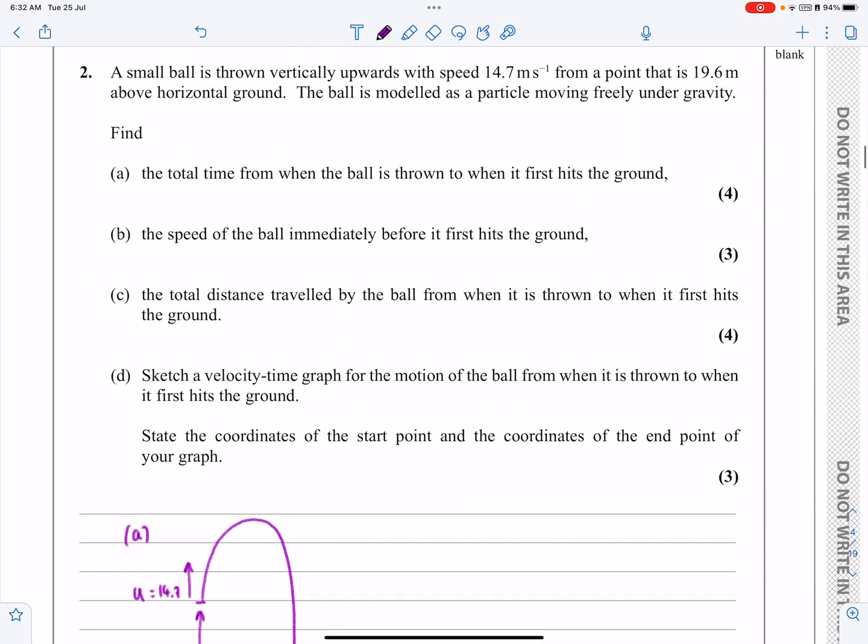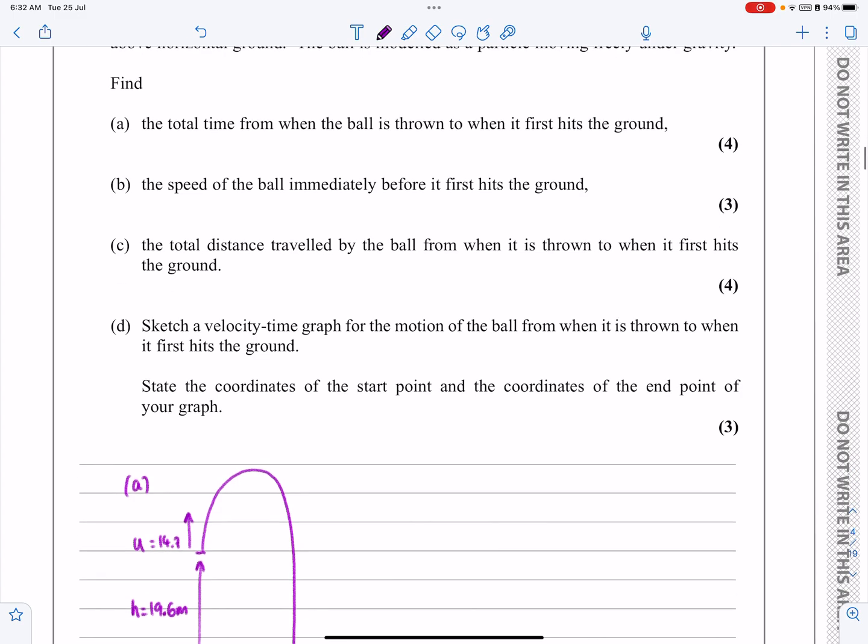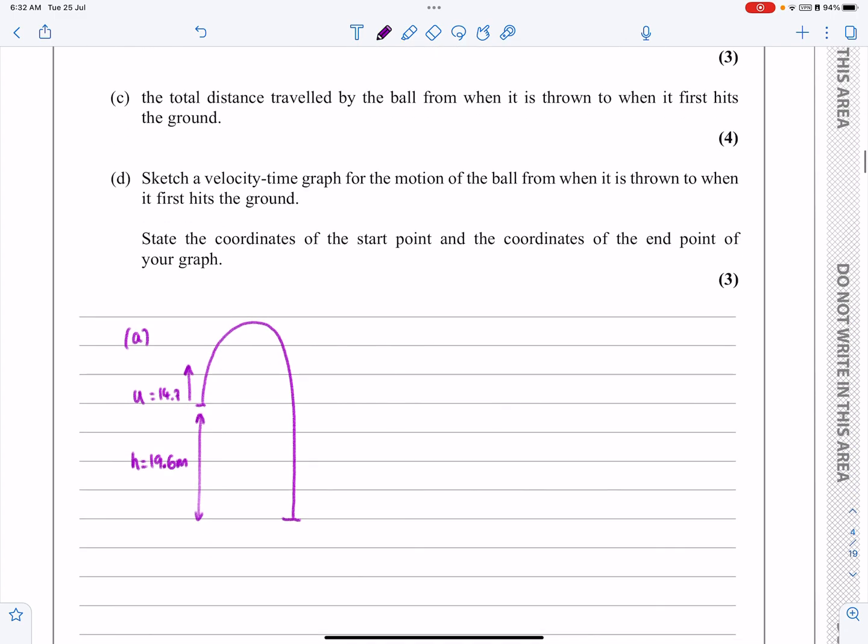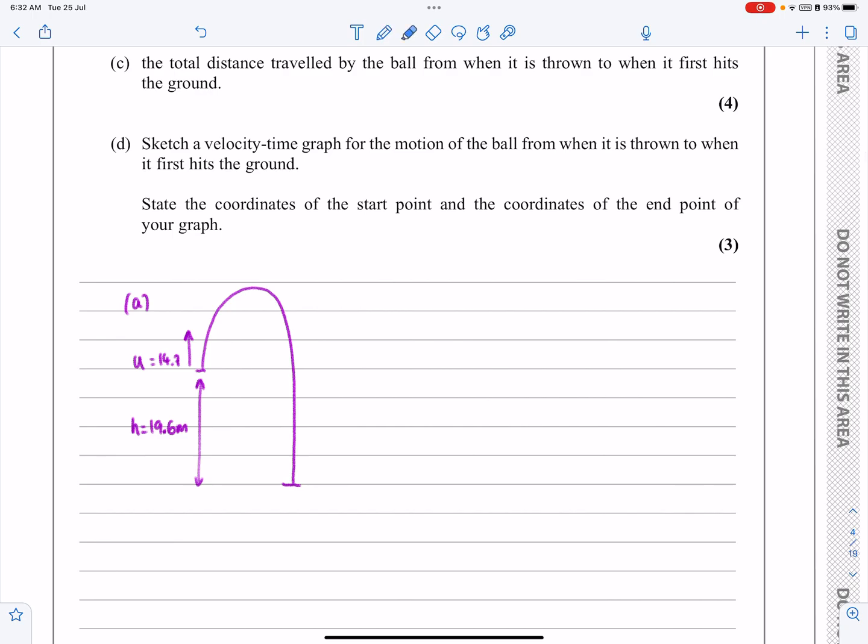Right. What do they ask me? First of all, they say find the total time from when the ball is thrown to when it first hits the ground. So I'm going to be considering that as my journey. And I can just do SUVAT for that situation. So SUVAT, what have we got? We're hoping to have four of the variables being involved and that we know three out of the four of them.